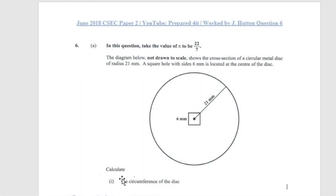Hello guys and welcome back to another video. Today we'll be working the June 2018 Physics Mathematics Paper 2, Question 6. It says: take the value of pi to be 22 over 7. The diagram below, not drawn to scale, shows the cross section of a circular metal disc of radius 21 millimeters. A square hole with sides 6 millimeters is located at the center of the disc.